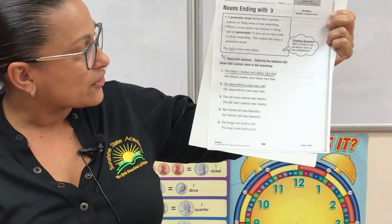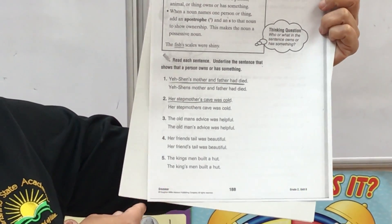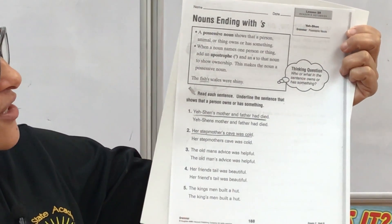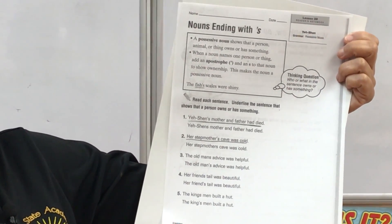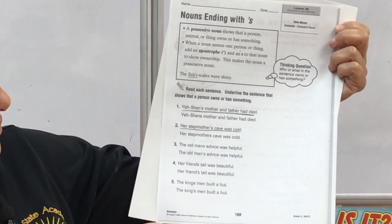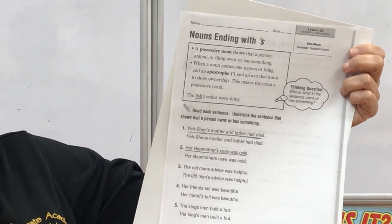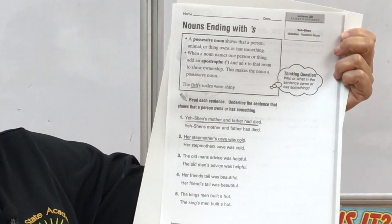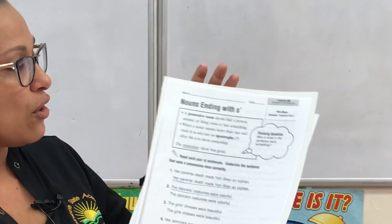For example, number one from the story: 'Yeshen's mother and father had died.' I underlined the first one because it shows ownership — Yeshen's mother and father. The other version is missing the apostrophe between the N and the S. Number two: 'Her stepmother's cave was cold.' The other version is missing the apostrophe after the R, which shows the stepmother's ownership of the cave.